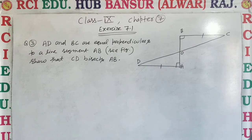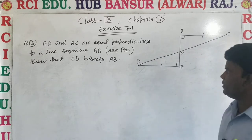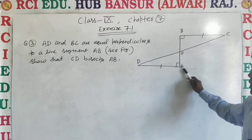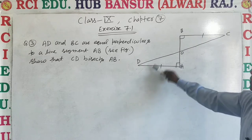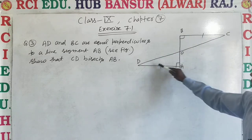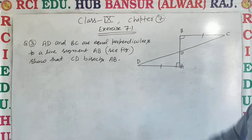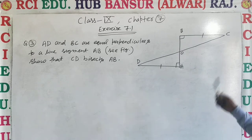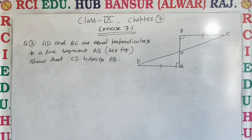Question Number 3: AD and BC are equal perpendiculars to a line segment AB. We need to show that CD bisects AB.